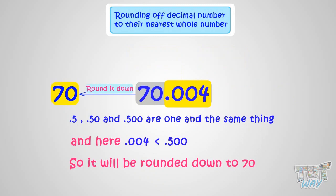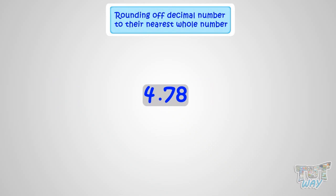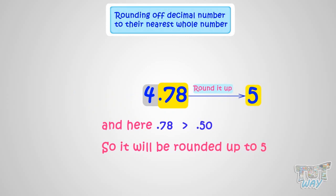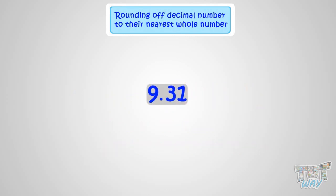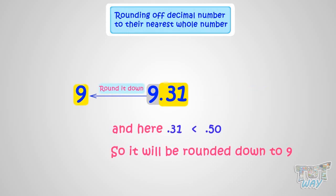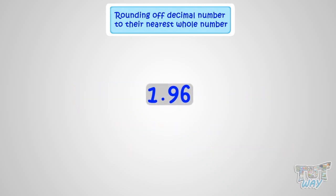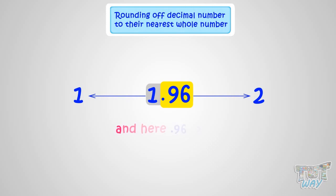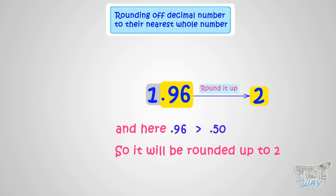So kids, now we know how to round decimal numbers to the nearest whole numbers. Let's round off some decimal numbers quickly. 4.78 lies between 4 and 5 — 0.78 is bigger than 0.50, so it will be rounded up to 5. 9.31 lies between 9 and 10 — 0.31 is less than 0.50, so it will be rounded down to 9. 1.96 lies between 1 and 2 — 0.96 is bigger than 0.50, so it will be rounded up to 2.